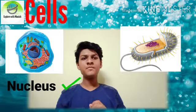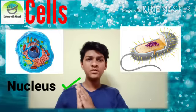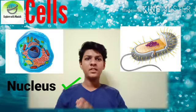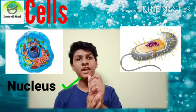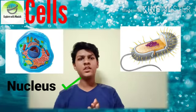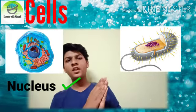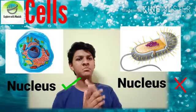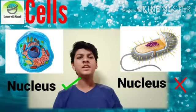The eukaryotic cell has a nucleus — they have a defined nucleus. The prokaryotic cell does not have a defined nucleus.